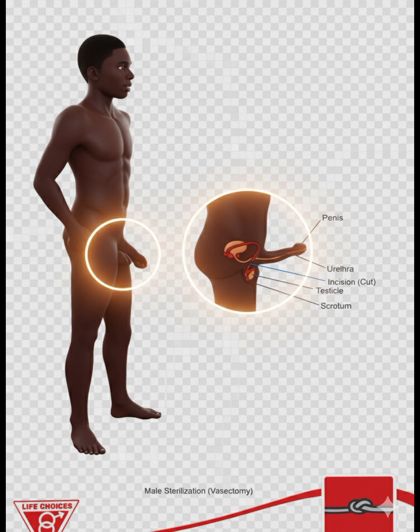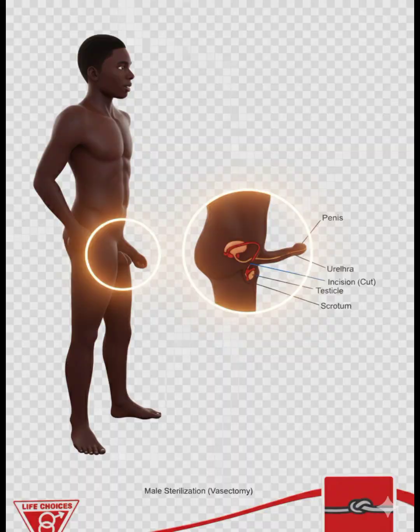For permanent contraception, vasectomy blocks the tubes that carry sperm — its mechanism of action is a physical barrier that prevents sperm release. Tubal ligation blocks or ties the fallopian tubes, with a mechanism of action that creates a physical barrier preventing the egg and sperm from meeting. Both are permanent choices, requiring careful counseling.